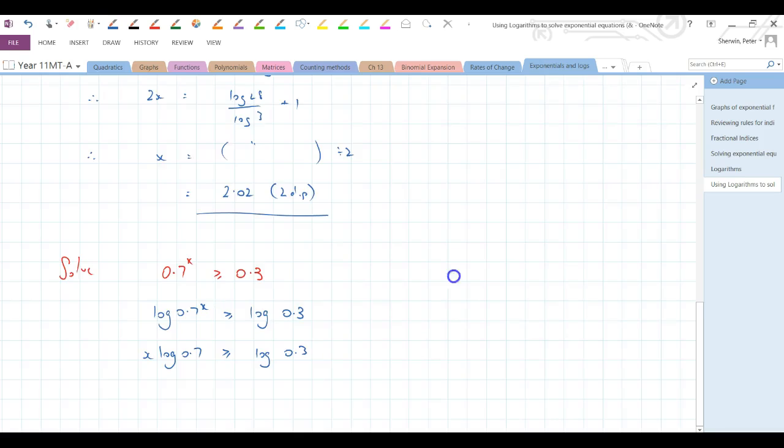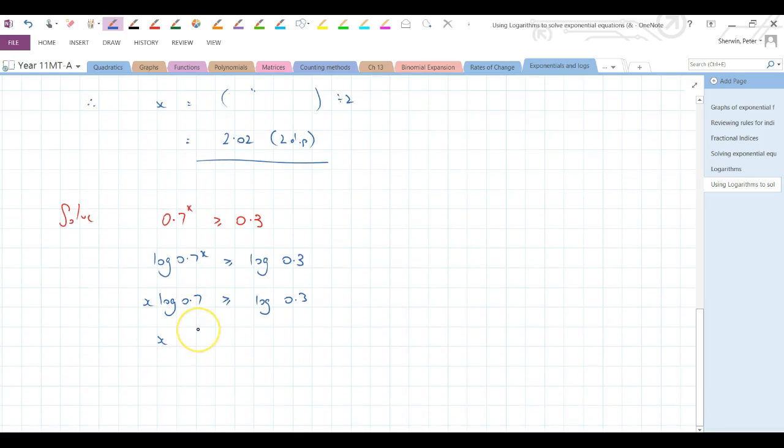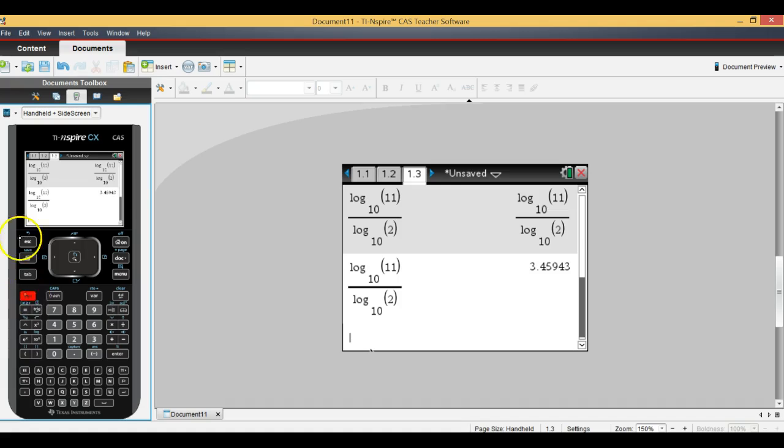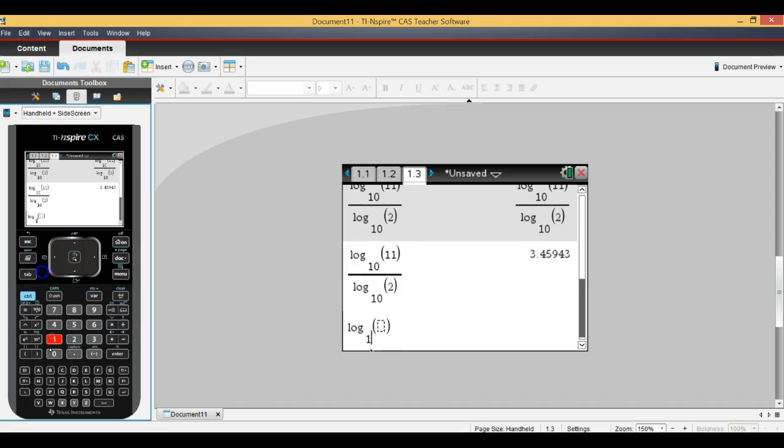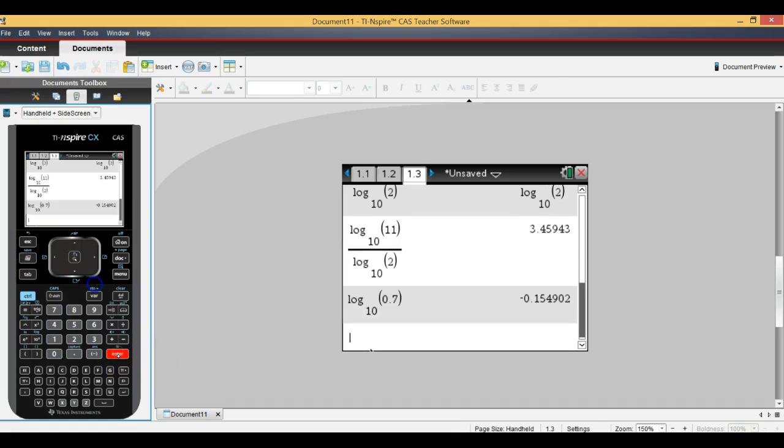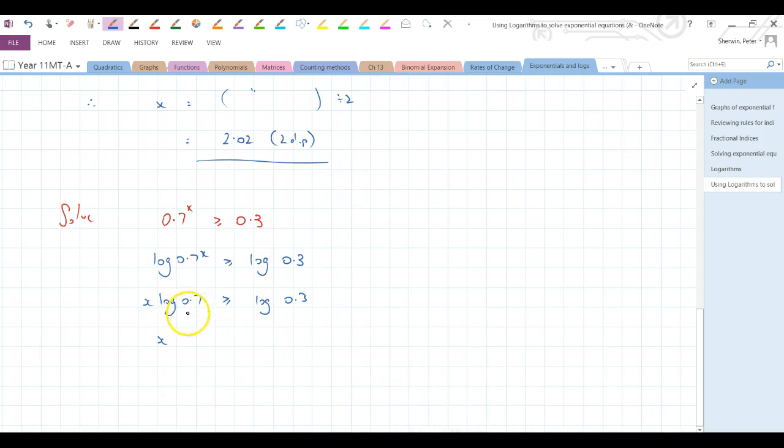Same first two steps as we did up there. Alright, now this is where we need to be careful. What is the value of log 0.7? If we put that into our calculator, log 0.7, I'll put that in. It doesn't matter what base I use here, the same effect. I've got a negative result. I'm dividing by a negative. What happens when I divide by a negative? So I'm dividing log of 0.3 by log of 0.7, but that is a negative. When we divide by a negative, an inequality sign turns the other way around, does it not? So x is going to be less than or equal to log of 0.3 over log of 0.7, which at two decimal places means that x is less than or equal to 3.38.